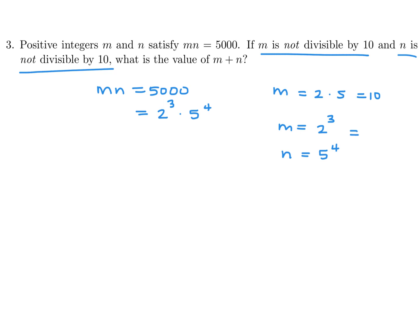So this becomes 8, and this becomes 625. And that's it. So we want m plus n — that's easy. m plus n would therefore be 8 plus 625, and that is 633.